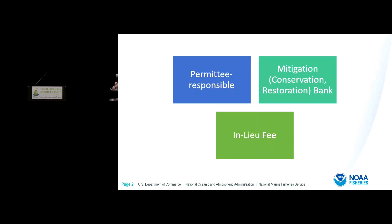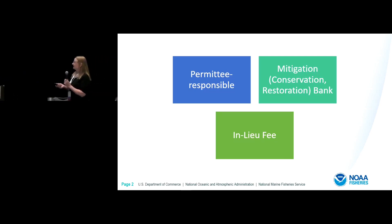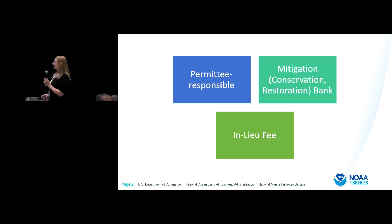There are three common mechanisms for conducting compensatory mitigation. The first one is permittee responsible. And then there's banks — originally mitigation banks, but now additional types of banks. And then something called an in-lieu fee arrangement.